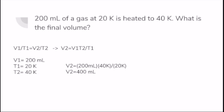With the given information, V1 is equal to 200 milliliters, T1 is equal to 20 Kelvin, and T2 is equal to 40 Kelvin. To find V2, just plug it into the equation and multiply 200 milliliters by 40 Kelvin and divide it all by 20 Kelvin to get a total of 400 milliliters.